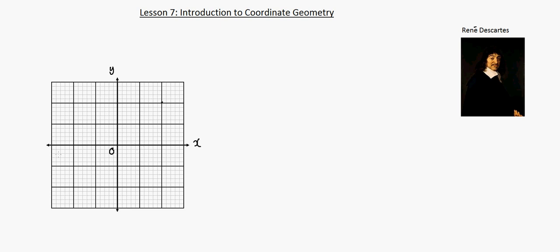You can fill in the numbers by however many you want, but I'm going to choose to go up by ones. So one, two, three. And seeing as this is a number line, there's also negatives. So this would be negative one, negative two, and negative three. And I'm going to go along the y-axis with ones as well. So this would be one, two, three, negative one, negative two, negative three.